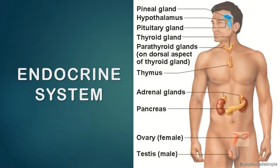The thymus gland is involved in the growth, development, and maturation of T lymphocytes. It releases a hormone called thymosin, which promotes the development of T lymphocytes.